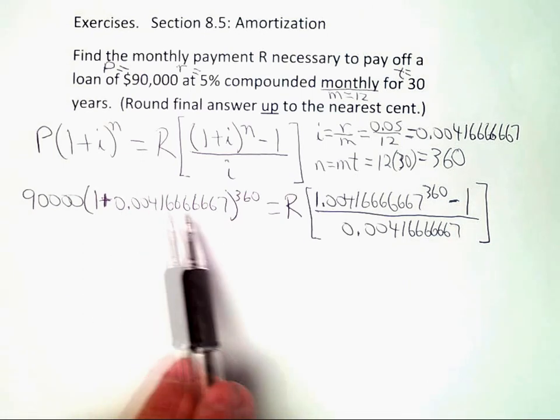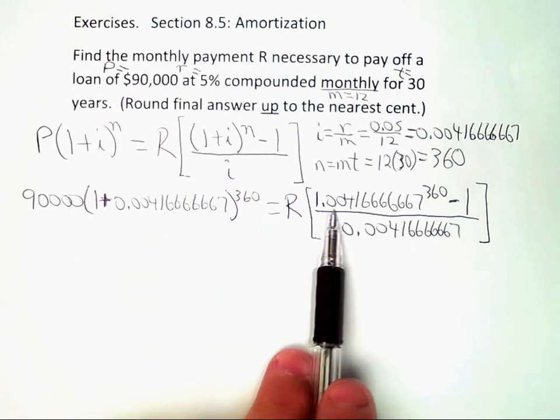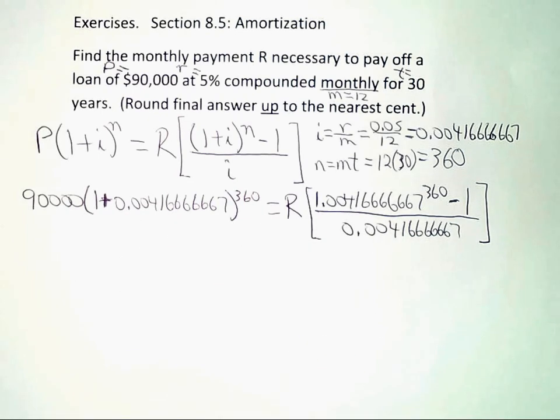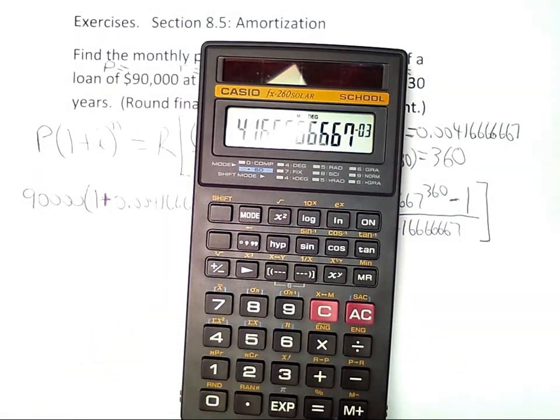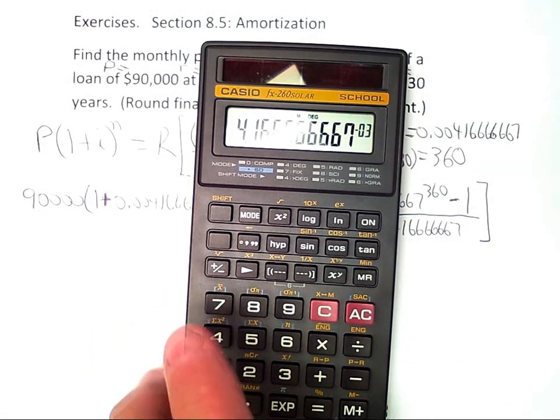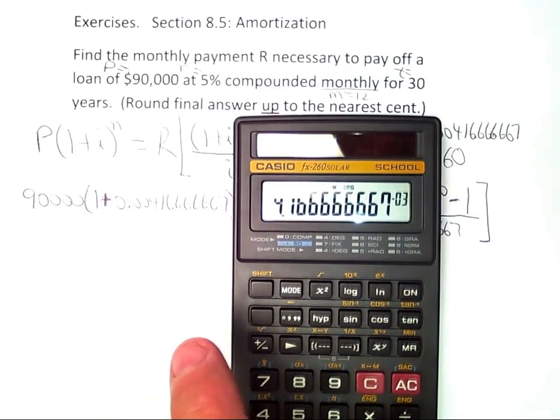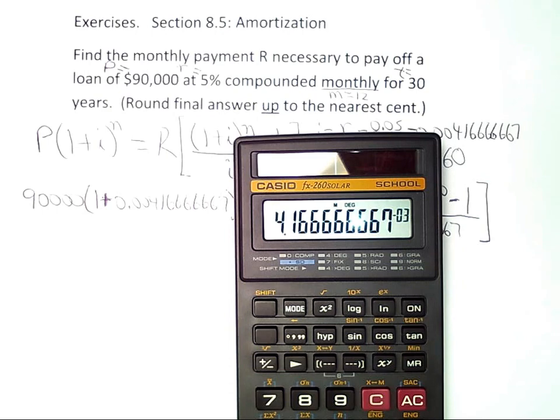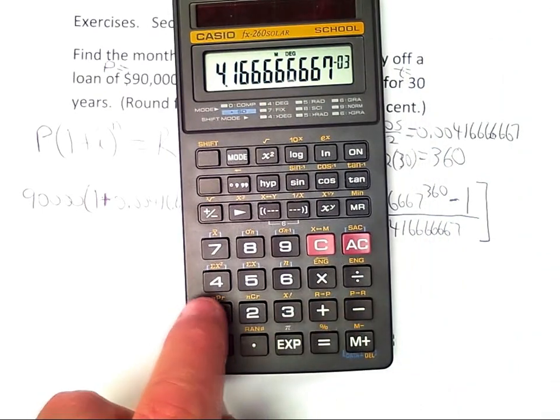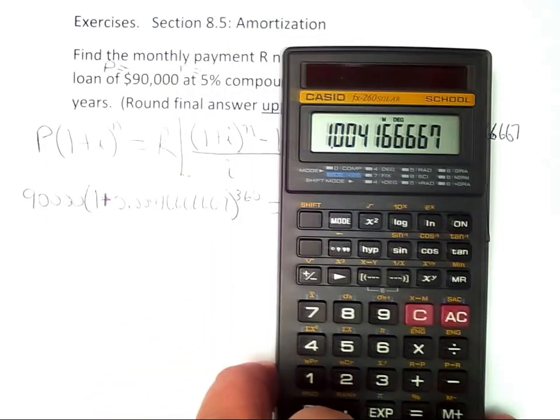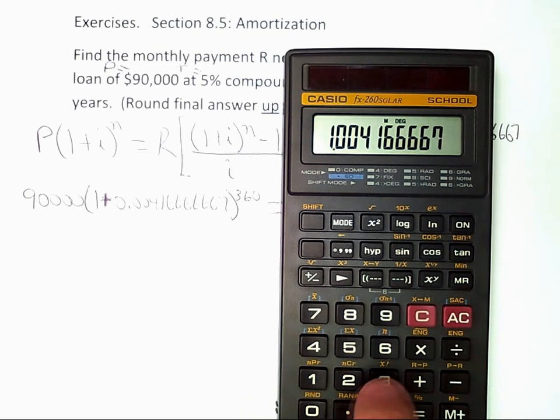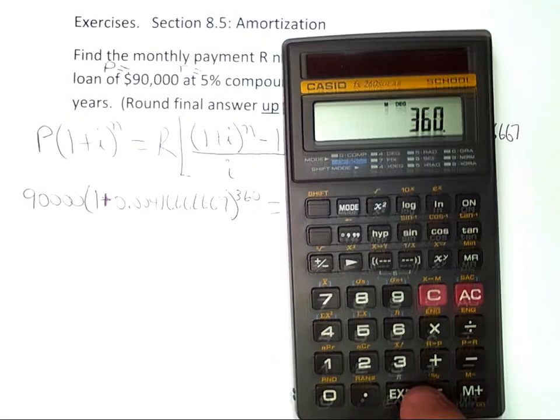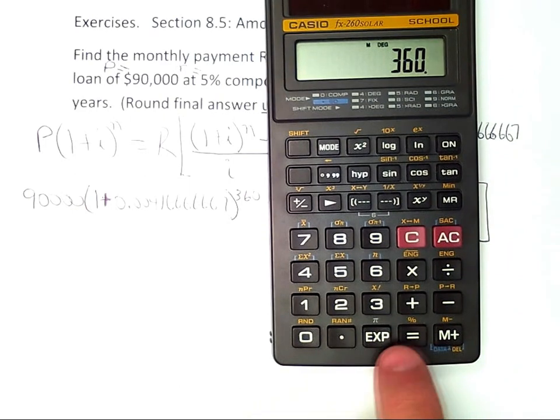So the next thing I want to do is take this 1.04, etc., and raise it to the 360th power. I've got the 0.004 already in there, so I just need to add 1 to it. Remember, I still have the interest rate in the calculator, so all I have to do is add 1 to it. So if I do plus 1 equals, I have this number that I need to raise to the 360th power. The power button is the X to the Y, and then I type in 360, and hit the equal sign.